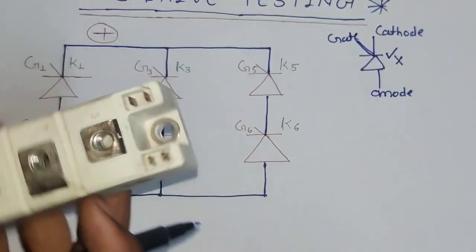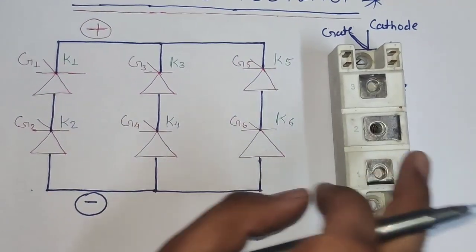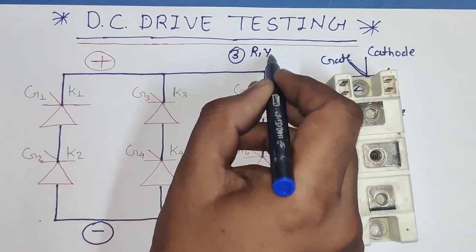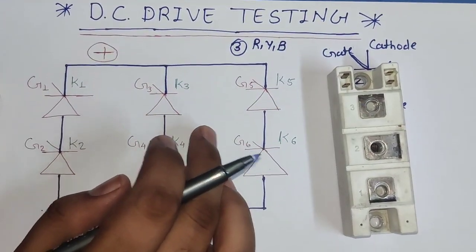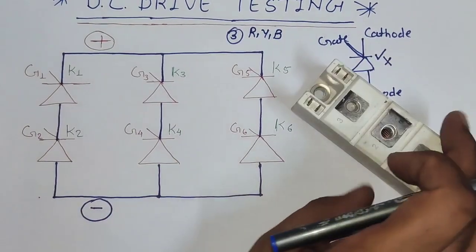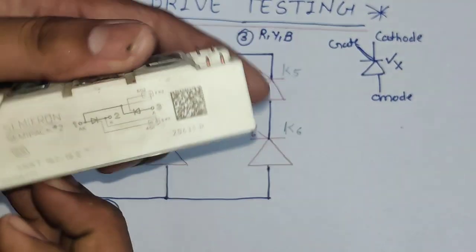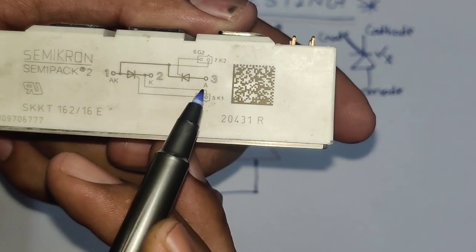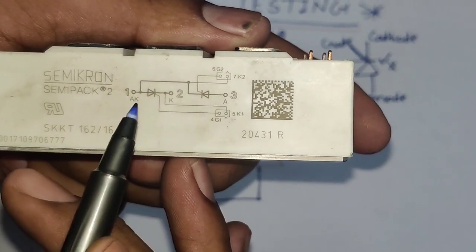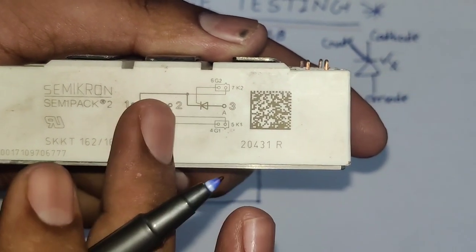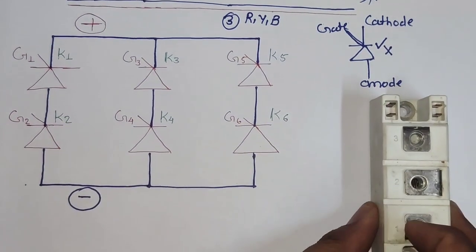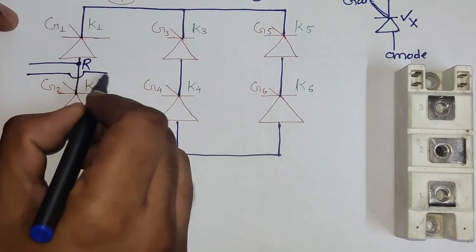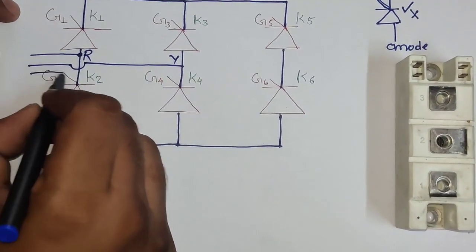Also in a DC drive, we have a total of 3 thyristors — one thyristor for R phase, one for Y phase, and one for B phase. So we have 3 thyristors total, and in each thyristor we have 2 SCRs. You can see the first SCR and the second SCR. Input power supply connects at R, Y, and B.